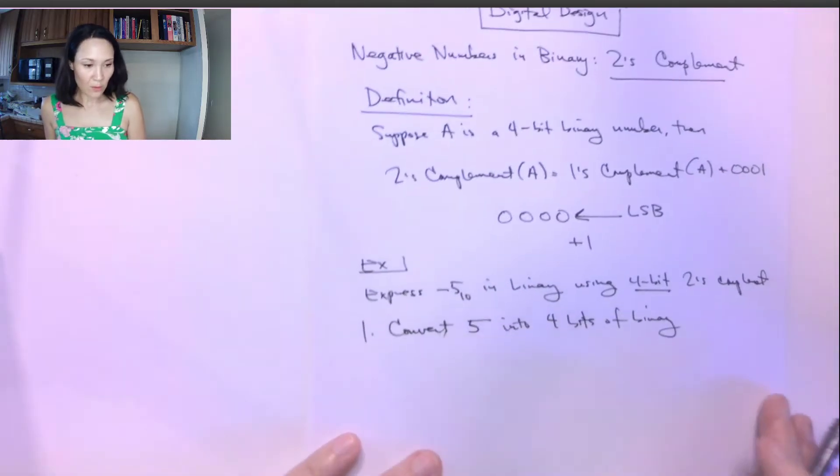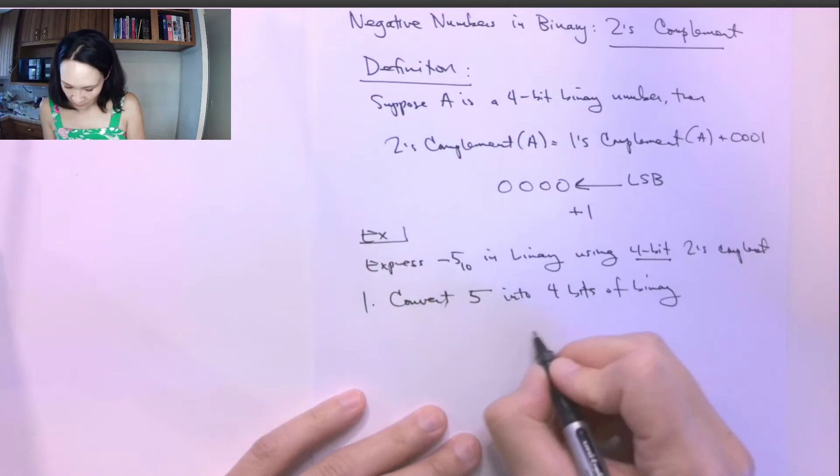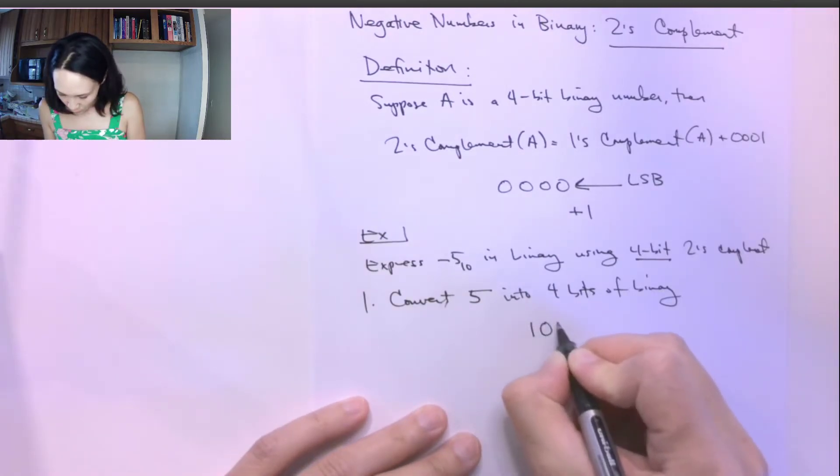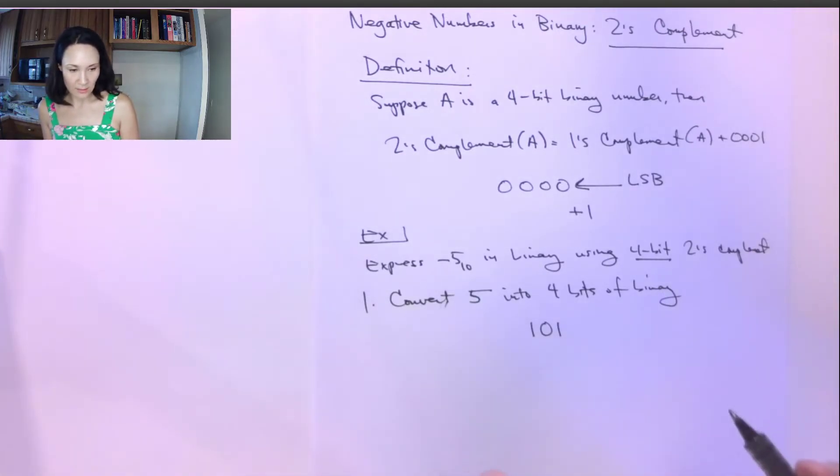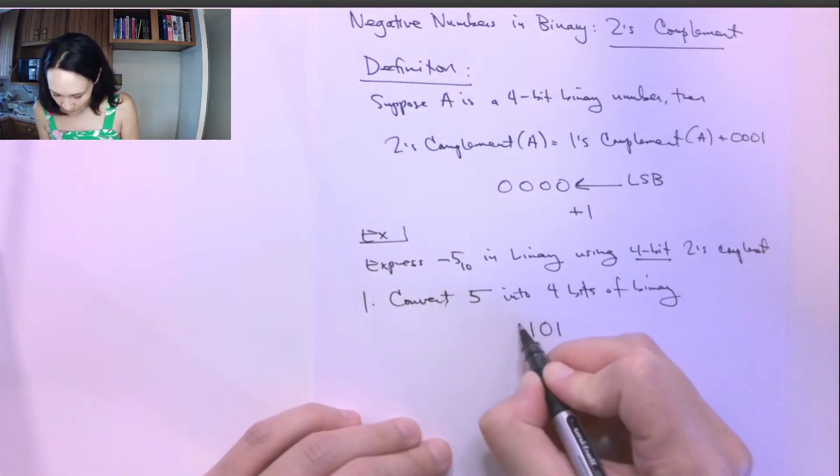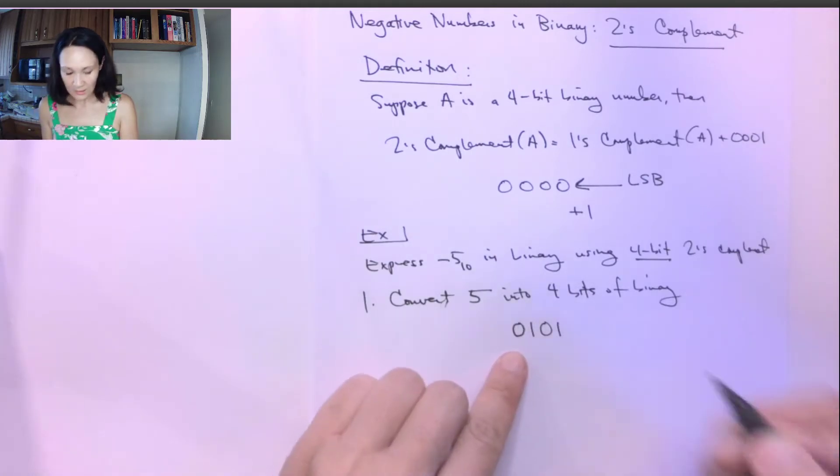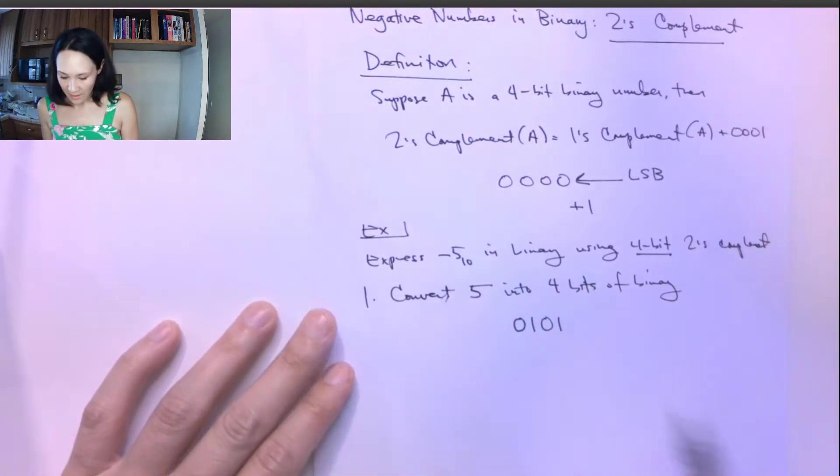If you do the conversion of five into binary, five in binary is 101. So we actually only need three bits in order to represent this number. But it's important that we put this zero here in the most significant bit position because we need all four bits here before we proceed with two's complement. So once we've done that, now we're ready to take one's complement of that number.